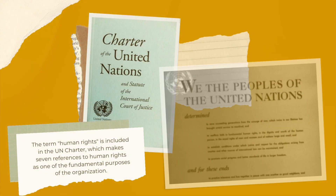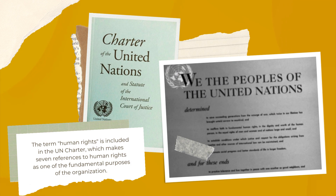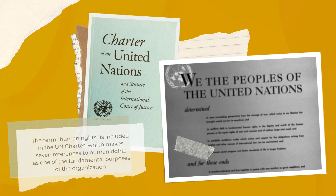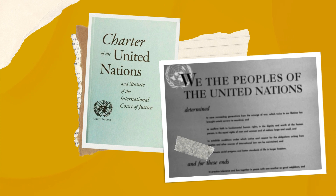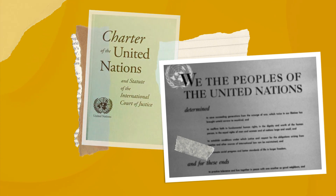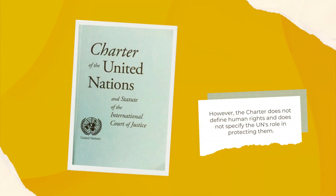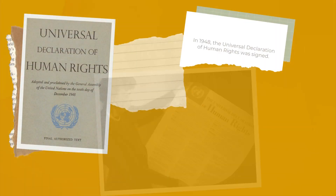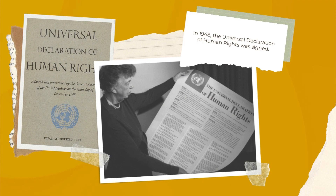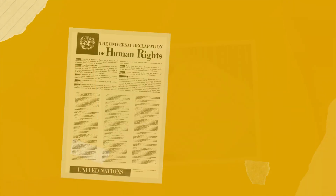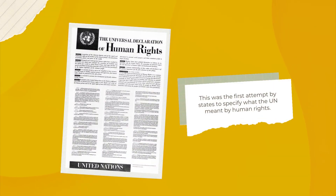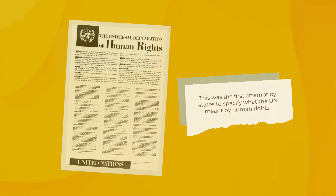The term human rights is included in the UN Charter, which makes seven references to human rights as one of the fundamental purposes of the organization. However, the Charter does not define human rights and does not specify the UN's role in protecting them. In 1948, the Universal Declaration of Human Rights was signed.